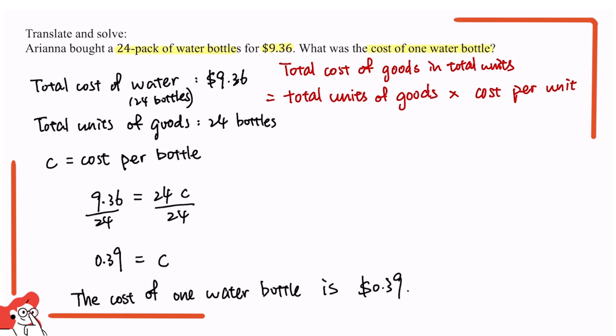And when you are solving for a question of cost of goods, please remember this formula: total cost of goods in total units equals to total units of goods times cost per unit. When you are asked to solve one component in this equation, you need to find the other two components and plug those numbers into this equation and then solve for the last component. And now we are done with the question. Thank you.